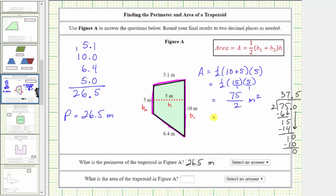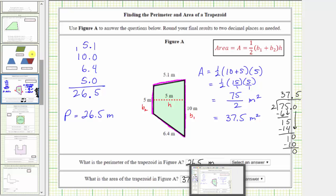It will be more common to express the area as 37.5 square meters, which indicates 37.5 square meters would fit inside the trapezoid. We enter 37.5 and we select the units of meters squared. I hope you found this helpful.